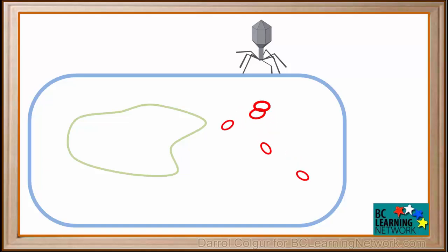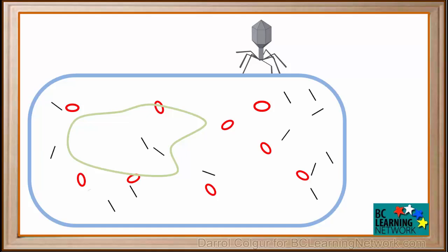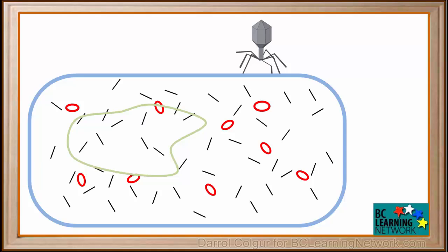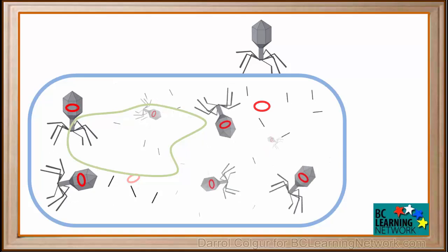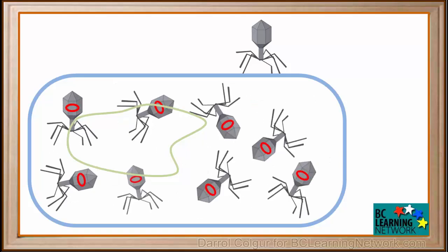This DNA or RNA from the virus takes control of the bacterial cell and uses the cell's resources to make copies of itself. These then direct the cell to manufacture proteins to use as building blocks for new viruses. The proteins are now assembled into many brand new viruses, which are all exact copies of the original one that infected the cell.